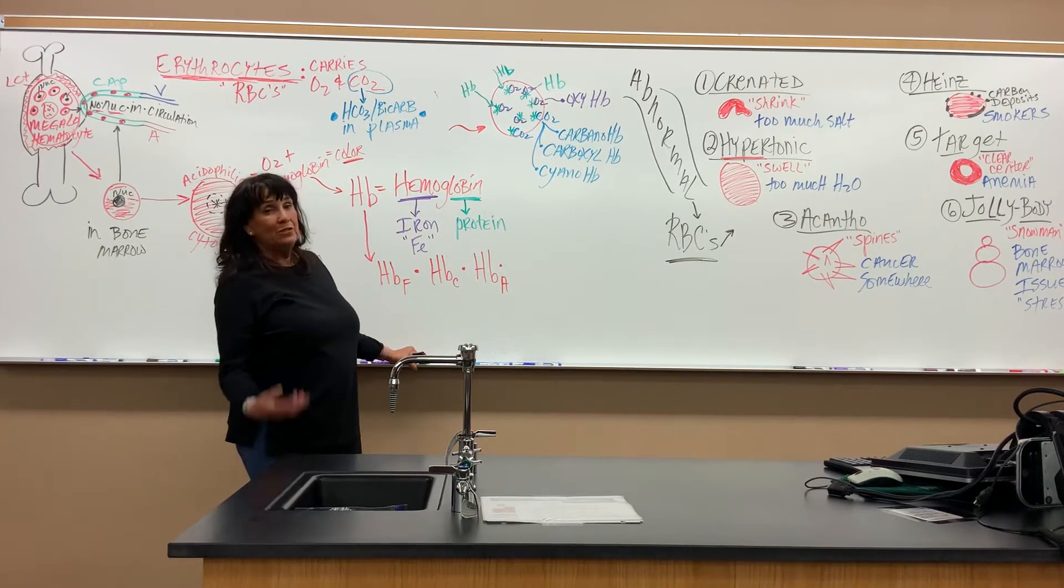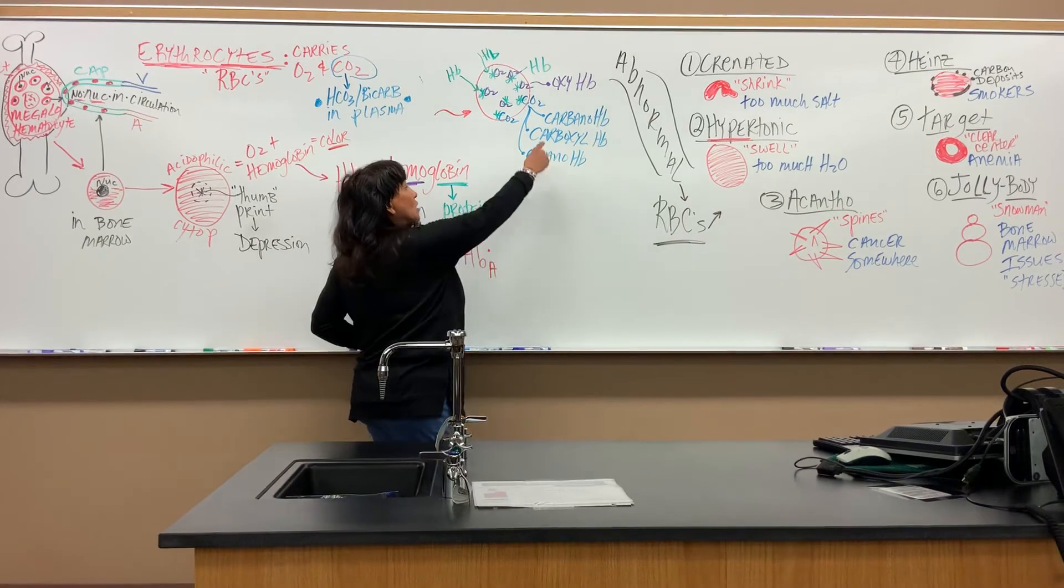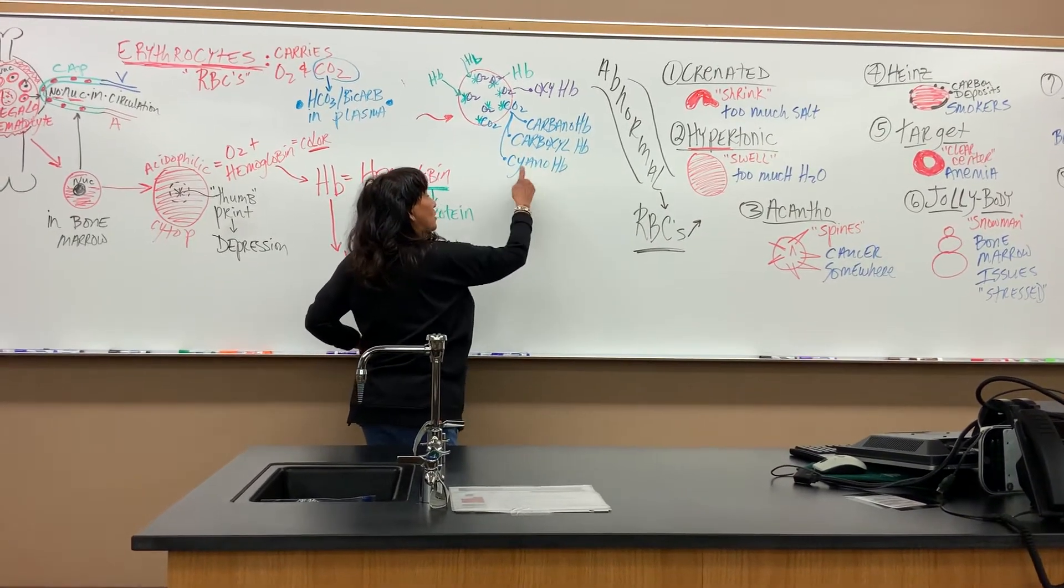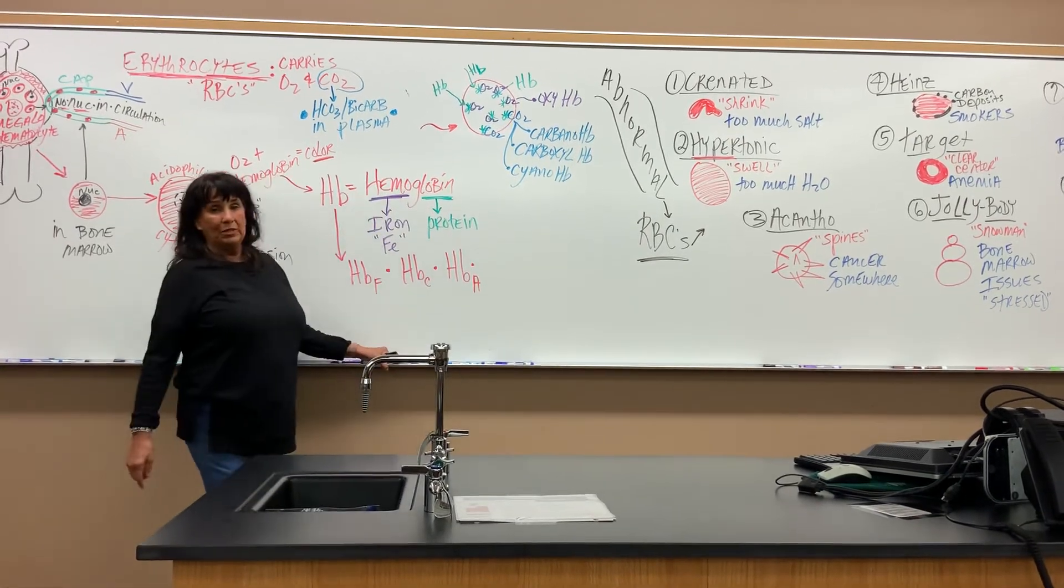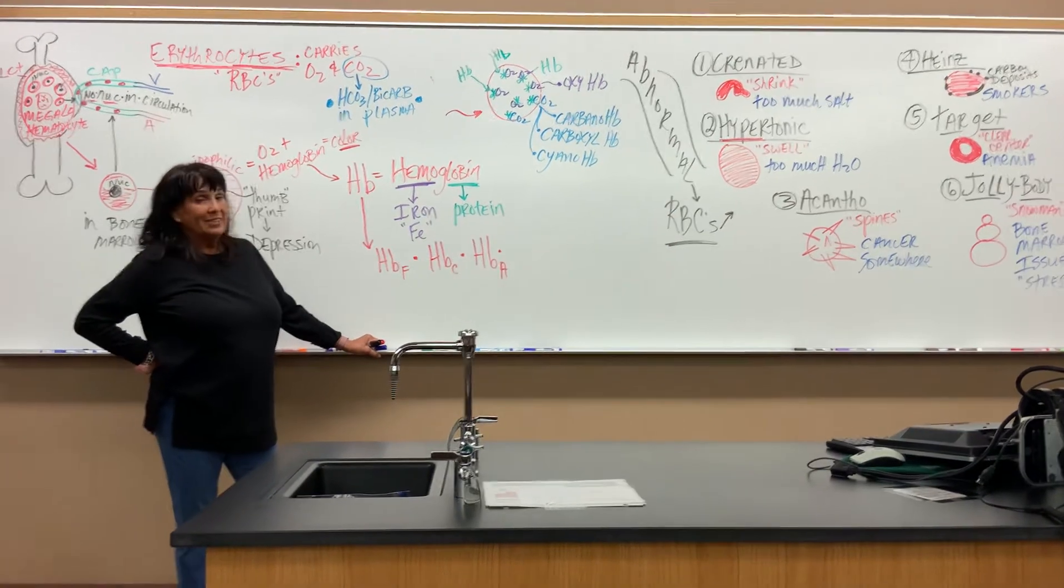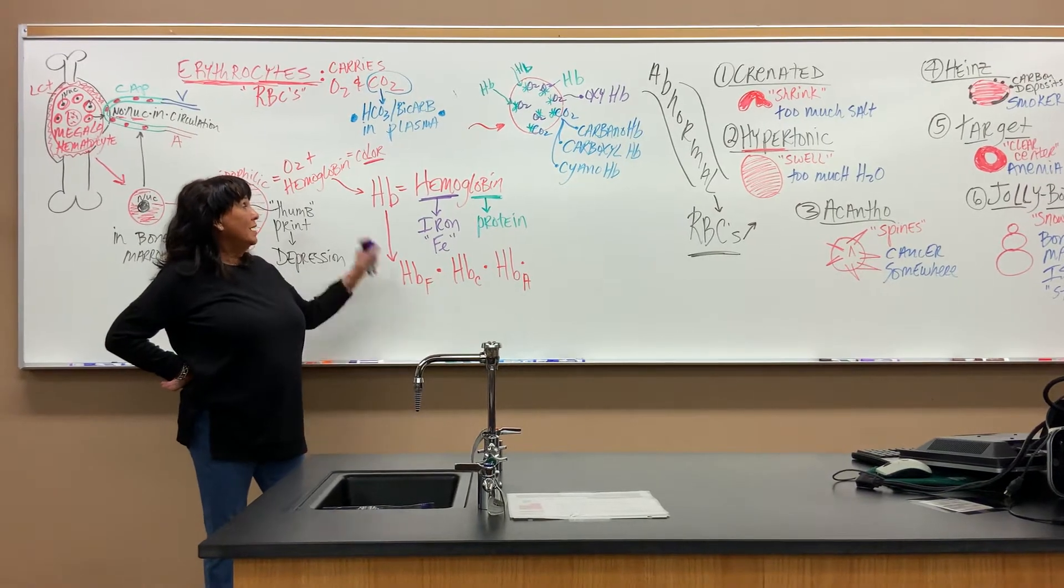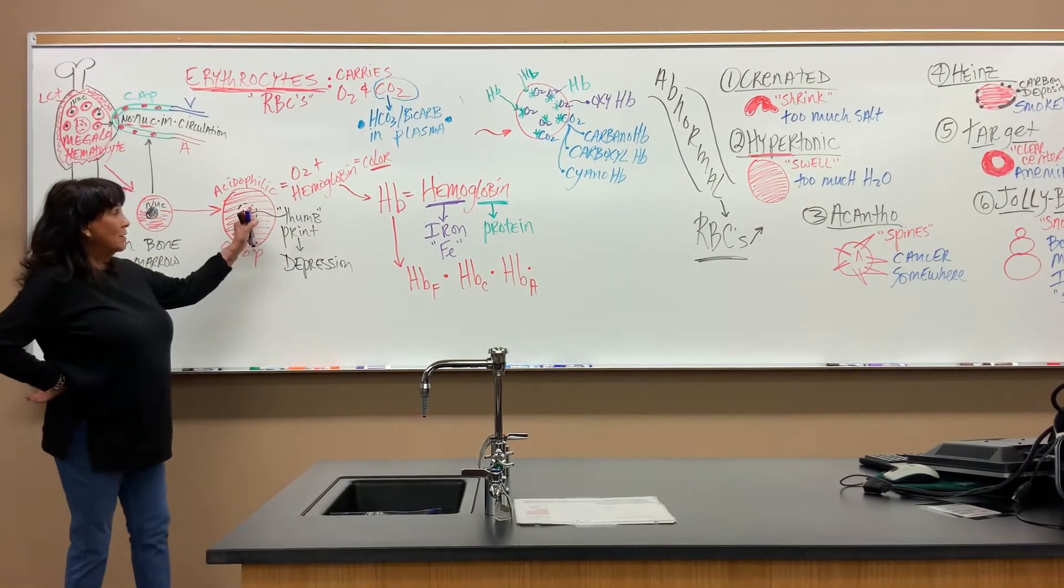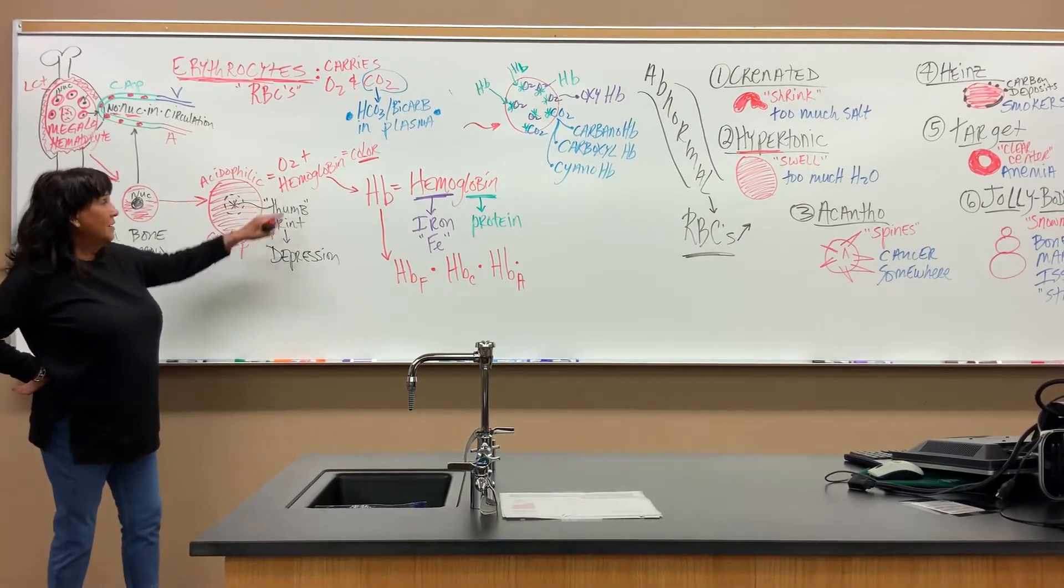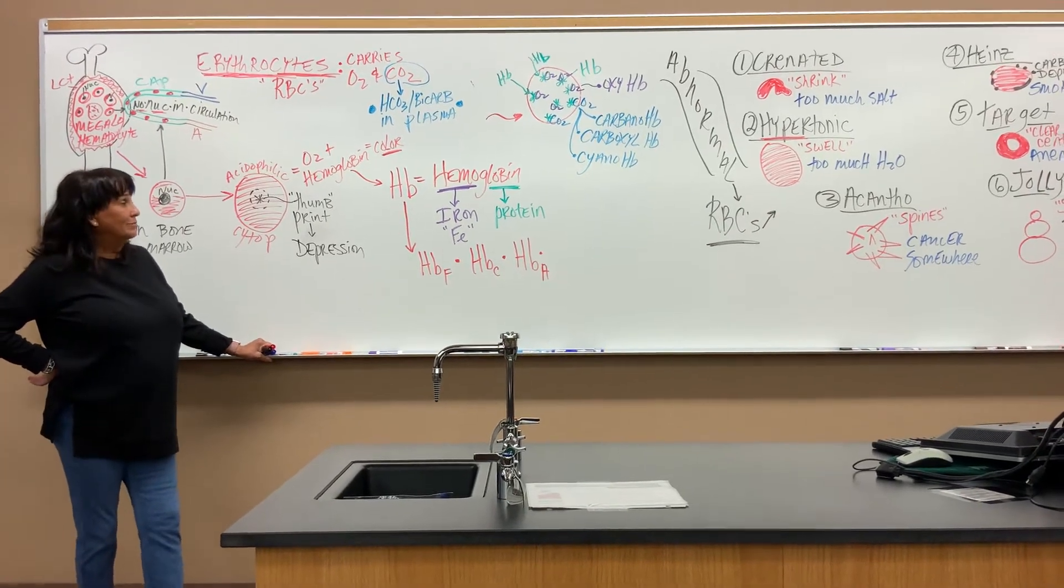We have three different terms for when it's carrying CO2. It's called carbano-hemoglobin, carboxyl-hemoglobin, or cyano-hemoglobin. Those are the terms meaning CO2 is attached to the hemoglobin. The acidophilic color of the cytoplasm is due to the amount of oxygen being carried and the amount of hemoglobin in that particular red blood cell.